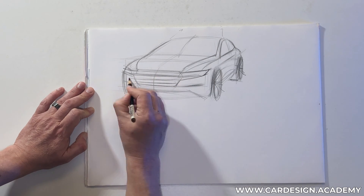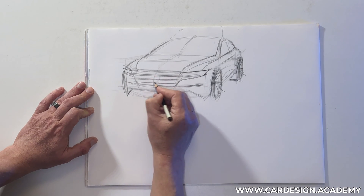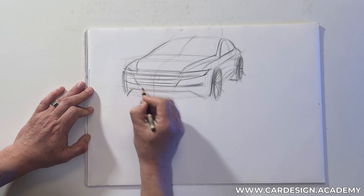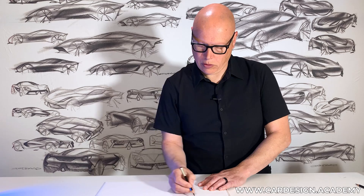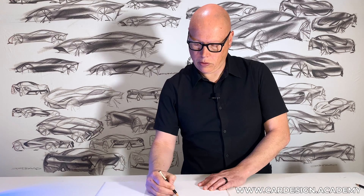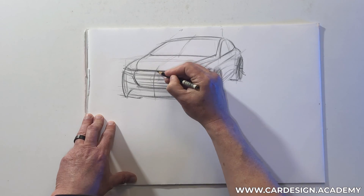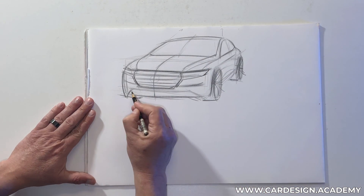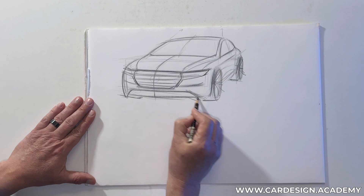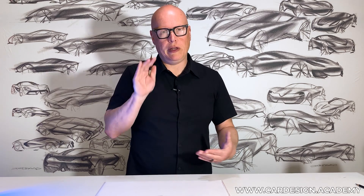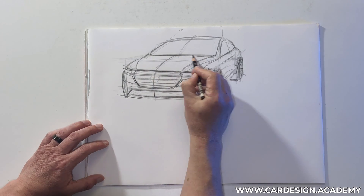I'm adding some details to the grill and some kind of emblem. You can see the bonnet is quite high — that's because it has to clear the engine, along with crash safety requirements such as pedestrian impact. For example, if it were to hit a pedestrian, the pedestrian needs to be able to contact the hood in a way that does not run into any really heavy components under the hood.